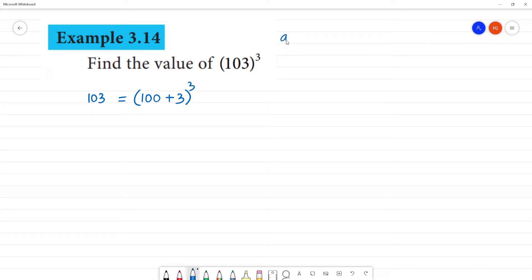This formula is a plus b the whole cube, which equals a³ plus 3a²b plus 3ab² plus b³. It is the formula.